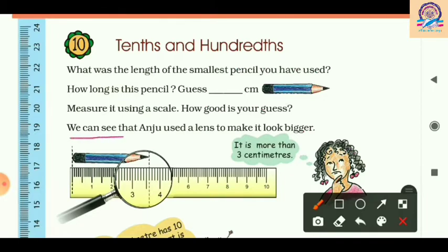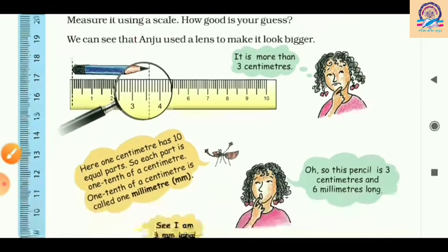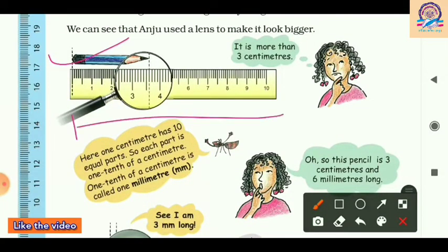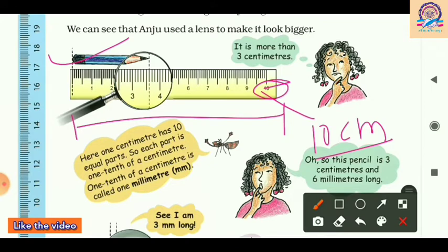Now we can see that Anju used a lens to make the scale bigger. Here is Anju measuring that pencil using a scale of 10 centimeters — at the end you can see it is written 10, so it is a 10-centimeter scale. The back portion of the pencil is placed on zero.